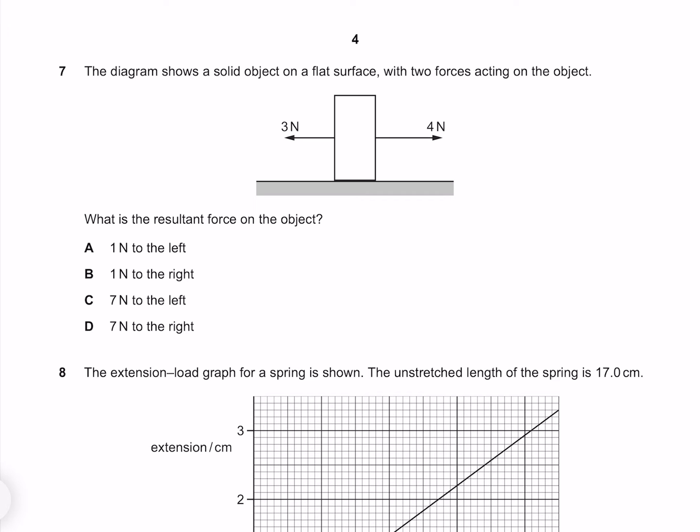The diagram shows a solid object on a flat surface with two forces acting on the object. What is the resultant force on the object? Our forces are in opposition, so they cancel each other out, but not entirely, because our 4 is greater than our 3. So our resultant force is going to be 1 newton in this direction, which is towards the right.